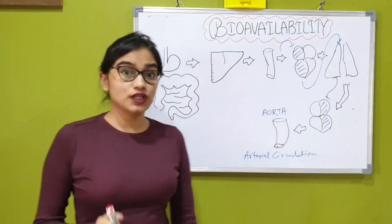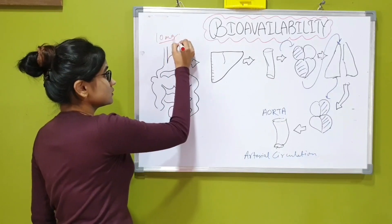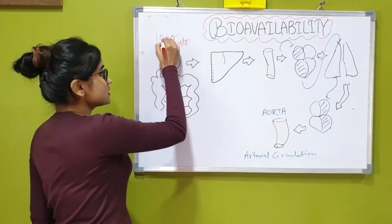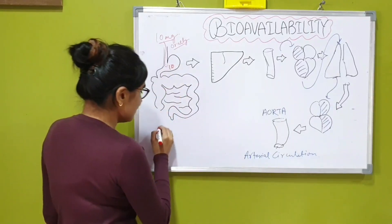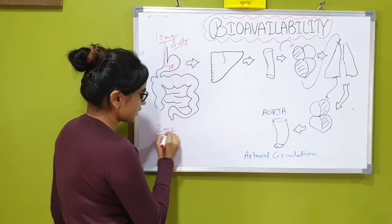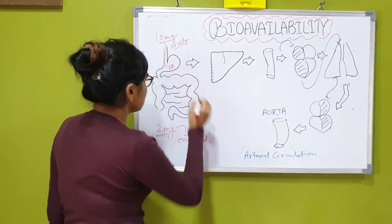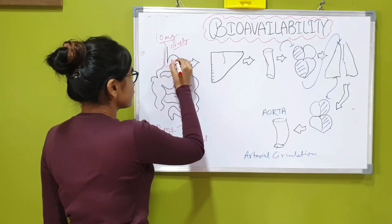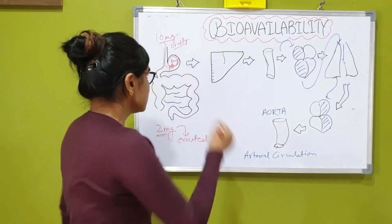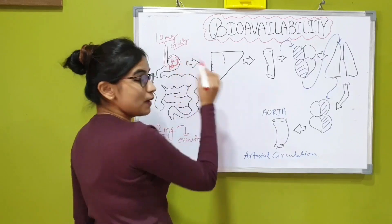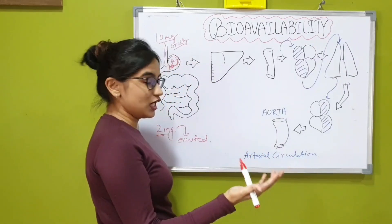Now, let's suppose you took 10 mg of a drug orally. This 10 mg goes into your GI tract and out of which 2 mg is not absorbed and is excreted out. What happens next is only 8 mg of the drug is left in the stomach to be absorbed. This 8 mg via the hepatic portal system goes into the liver where metabolism occurs.